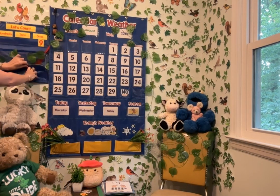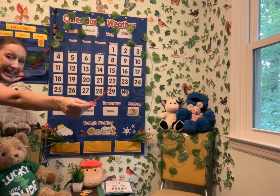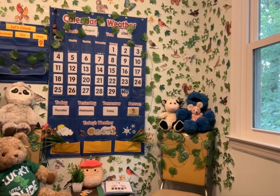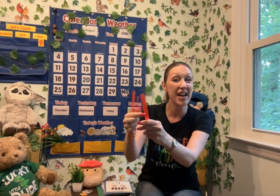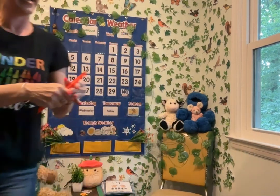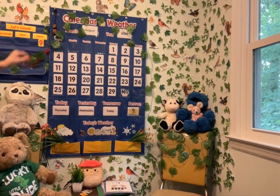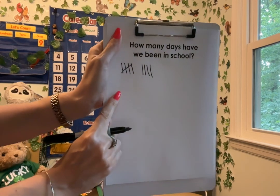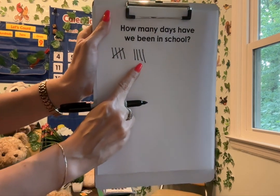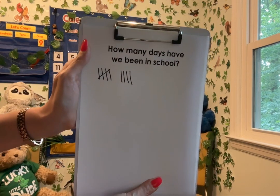We're going to add one counting rod to the ones pocket, and then get all of the counting rods — the nine ones — and let's count by ones. One, two, three, four, five, six, seven, eight, nine. We're going to do another tally mark. Sky write and pull straight down to show how many days we've been in school. We have one group of five and four ones: five, six, seven, eight, nine days learning together in kindergarten.